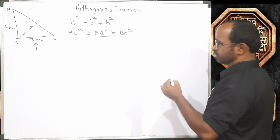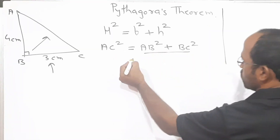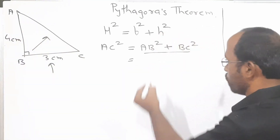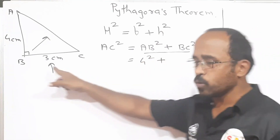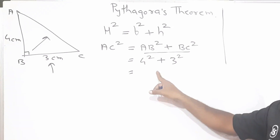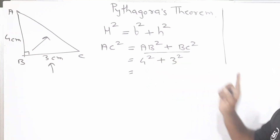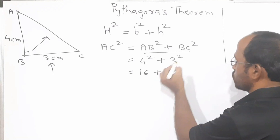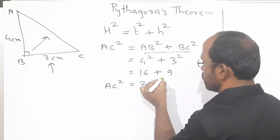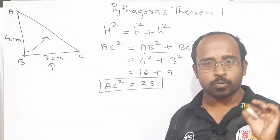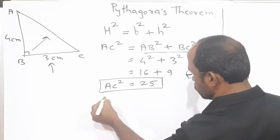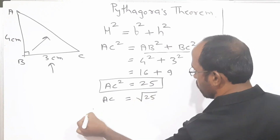So let's try to find it out. AB squared plus BC squared equals AC squared. AB is 4, so 4 squared plus BC — BC is 3 — so 3 squared. We solve the indices first: 4 squared equals 16, plus 3 squared equals 9, which equals 25. So this 25 is nothing but the square of AC. The square of the length of AC is 25. Then how much will AC be? AC equals the square root of 25, therefore AC equals 5.